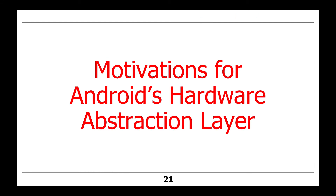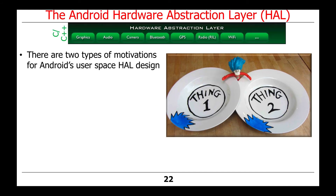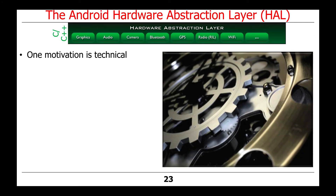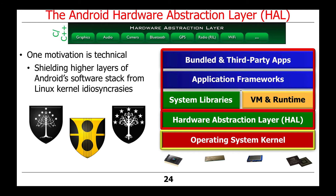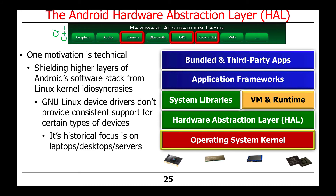Let's talk now about the motivations for Android's hardware abstraction layer. There are a couple of motivations for using a user space HAL design. One motivation is technical: we want to find a way of shielding the higher layers of the Android software stack from the idiosyncrasies of the underlying Linux kernel. For example, GNU Linux device drivers typically don't provide consistent support to access certain types of devices — things like cameras, GPS, or radio devices — which you would find on a mobile platform, but might not be found as commonly on Linux's historical focus of laptops, desktops, and servers. Therefore, the HAL provides these services so you don't have to write them yourselves in a lower-level ad hoc way.